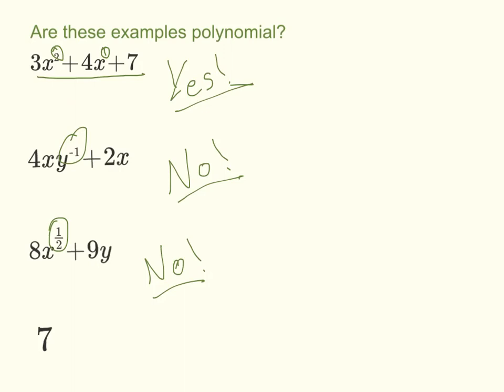Well, it's one term so that fits the criteria of one or more, and we don't see any negative or fractional exponents on a variable, do we? It's just a constant, but a constant is a polynomial, so yeah, seven's a polynomial.